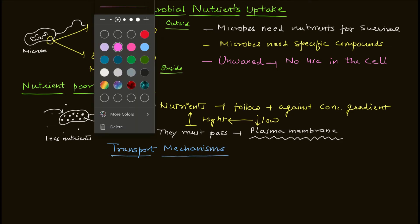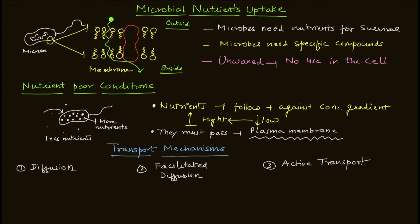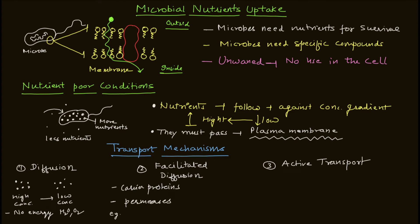We'll discuss the three major transport mechanisms. The first is simple diffusion — movement of molecules from higher concentration to lower concentration. Examples include water and oxygen. The second is facilitated diffusion, where diffusion happens in the presence of carrier proteins. Examples of these carrier proteins are permeases or major intrinsic proteins, which facilitate the transport of nutrients into the cell.